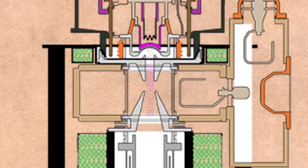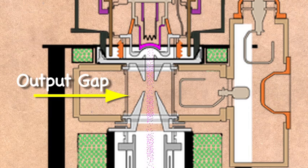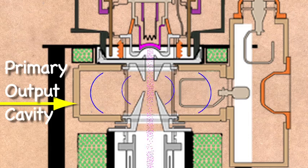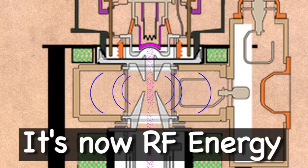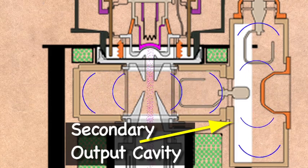As the density modulated beam of electrons flows down through the body of the IoT, they pass the output gap of the tube. This is where the primary output cavity is located. The modulated beam of electrons interact with this resonantly tuned cavity, and a probe intercepts this energy, and transfers it to the secondary output cavity.